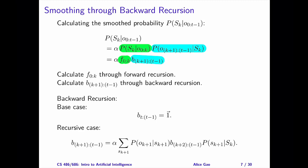Let's look at the formulas for backward recursion. For k equals t minus 1, we have the base case. In this case, the message is B sub t to t minus 1. This message is equal to the probability of O sub t to t minus 1 given S sub t minus 1.